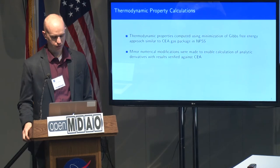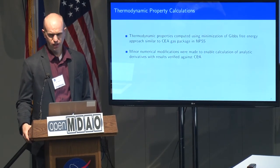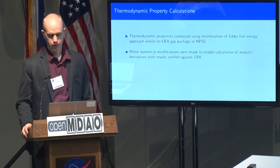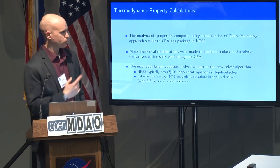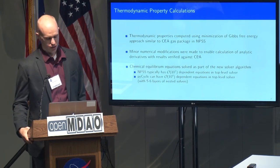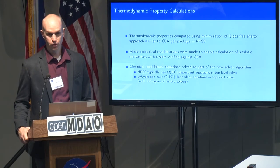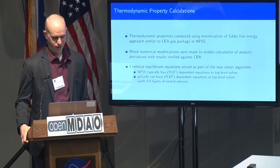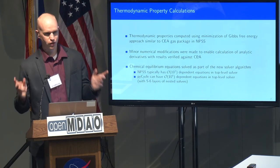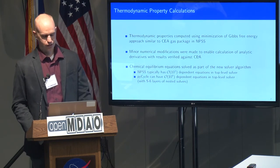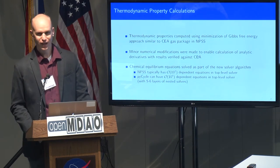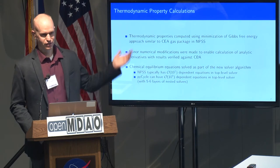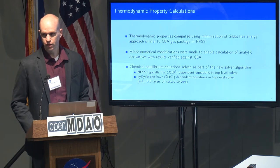We made minor modifications to give it smooth analytic derivatives. Justin was a lead author on a journal paper describing how we did the chemical equilibrium calculations for PyCycle. As a consequence, we're now solving all these chemical equilibrium equations as part of our top-level solver, which is different than NPSS. An NPSS model might typically have on the order of 100 dependent residual equations. With PyCycle, we're at 10^4 or higher depending on model complexity.